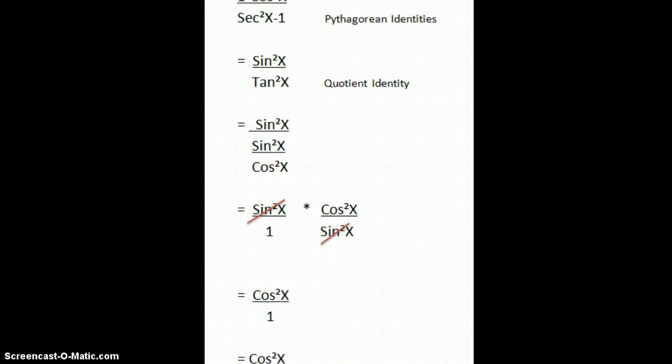Okay, example 2 is a simplification problem. It's kind of cut off at the top, but that says 1 minus cosine squared x over secant squared x minus 1. Both of these have squares. We're going to say both of these are Pythagorean identities. When you look at those identities, maybe do a little manipulating,